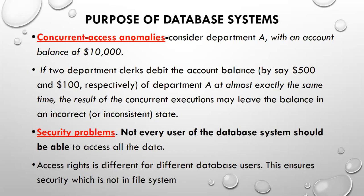The next one is concurrent access anomalies. Concurrent access anomalies means concurrently accessing a particular resource. We are considering Department A with an account balance of $10,000.